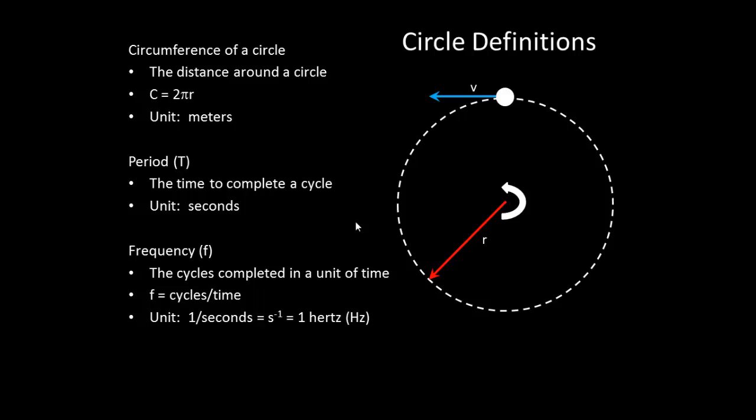So this will be 1 over seconds, which is also defined as a hertz. Notice that frequency is cycles per second, and period is the time to complete one cycle. So they're actually the reciprocal of each other. Period is equal to 1 over frequency. This is a note card equation.